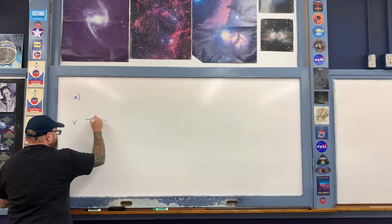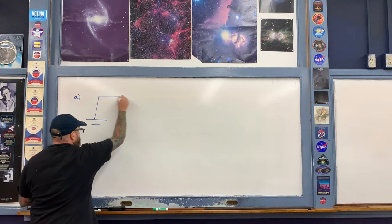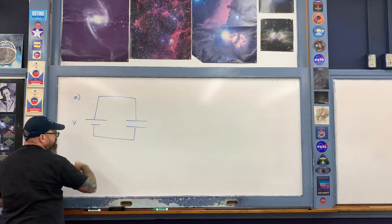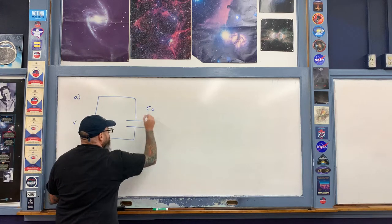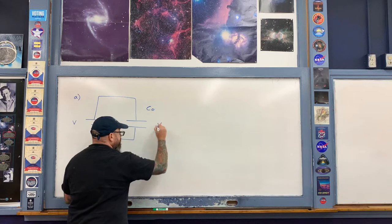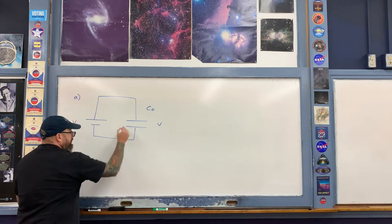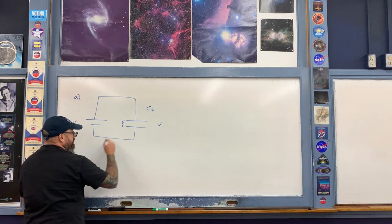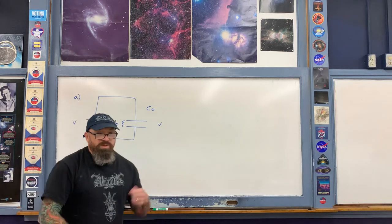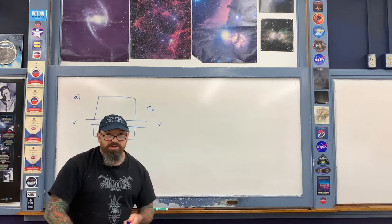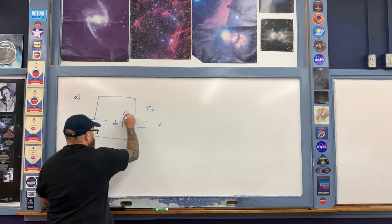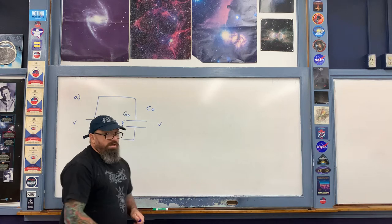Here's a battery of voltage V connected to our parallel plate capacitor. Initially it has a capacitance labeled C₀. Once fully charged it has voltage V, plate separation D₀, and an initial charge labeled Q₀.